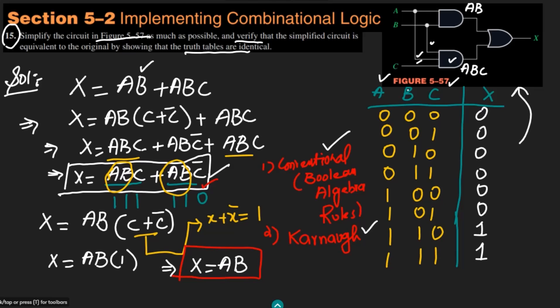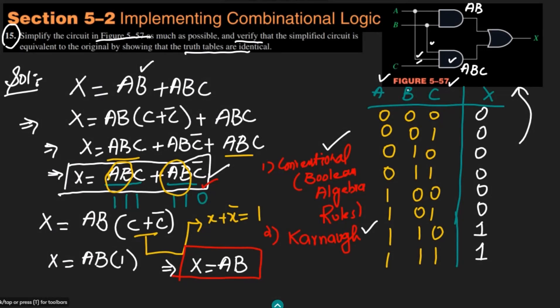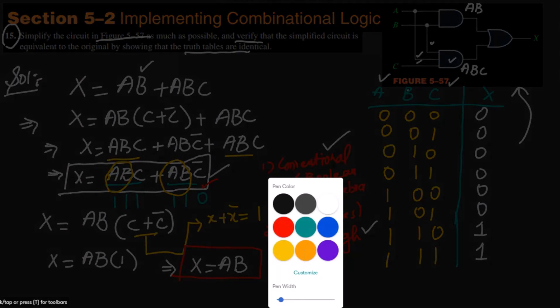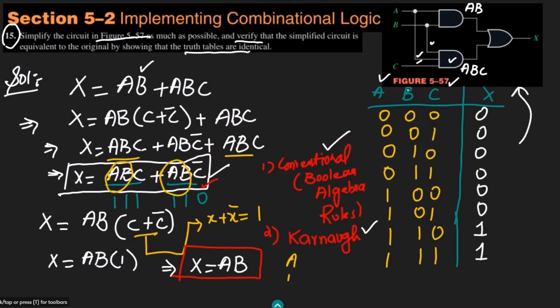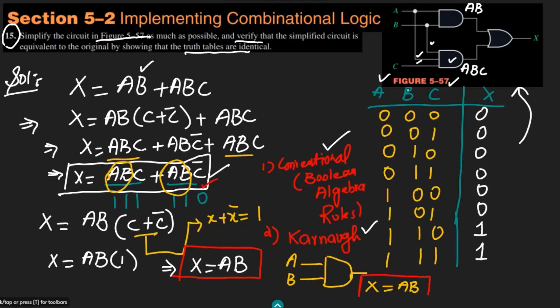This final simplified expression X = AB shows that when two inputs A and B are given, the output is simply their product. This can be implemented using a 2-input AND gate with inputs A and B, giving output X = AB.